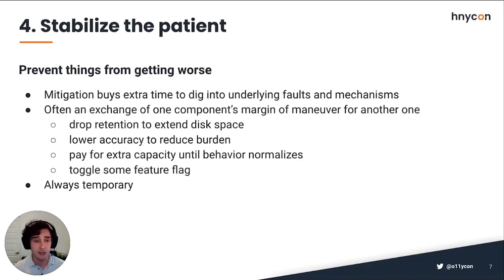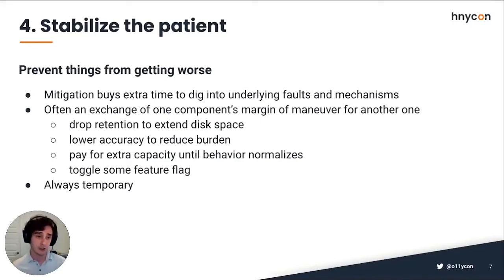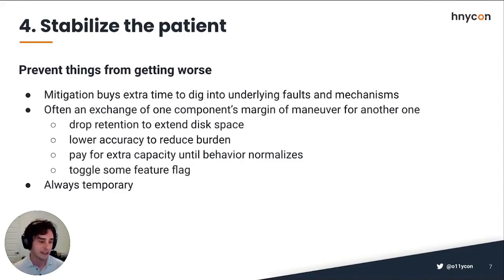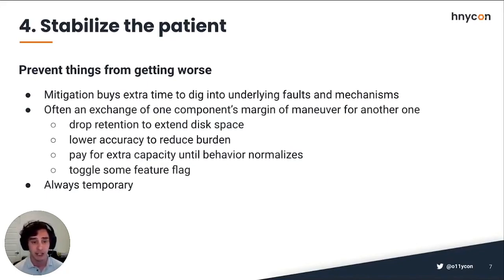The fourth step is stabilizing the patient. This is where observability tools help a bit less — strong CI/CD and rapid deployment help here. Once we've identified what's wrong, the question becomes: what actions can we take to bring balance back? Do we need a permanent solution, and if so, how do we keep things afloat until then? Like a ship with hull damage — you work the pumps until you make port. This requires expertise: people who know how to bend the system to keep it on target.